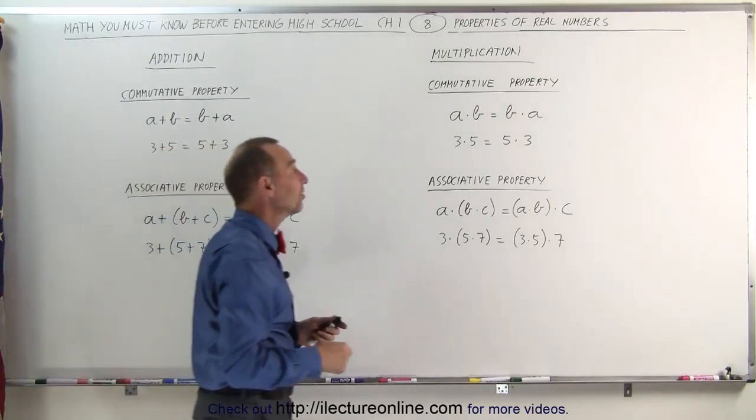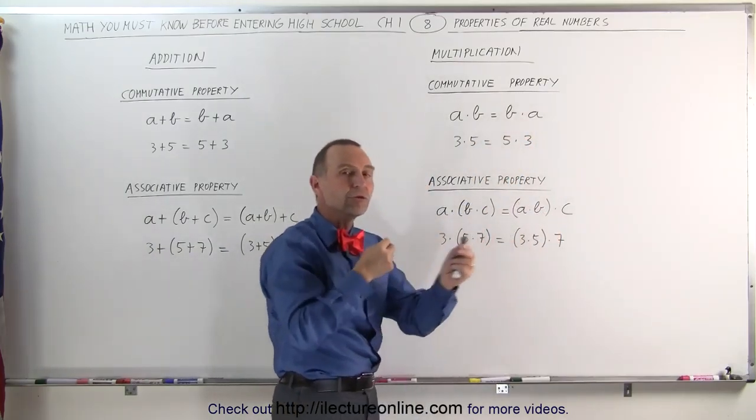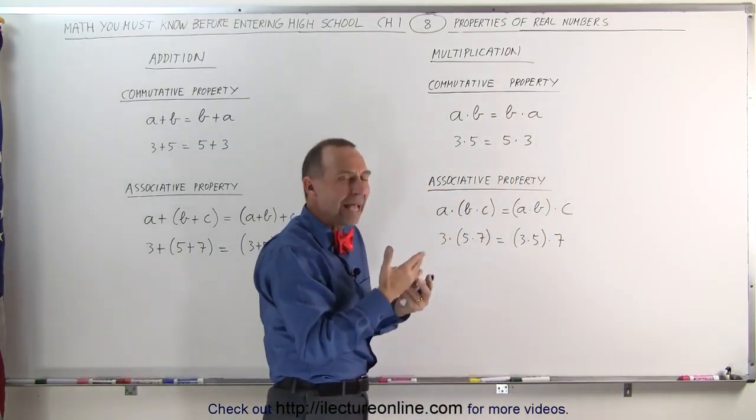As an example, 3 plus 5 equals 5 plus 3. That's considered to be the commutative property. In other words, we can move the numbers in addition around.